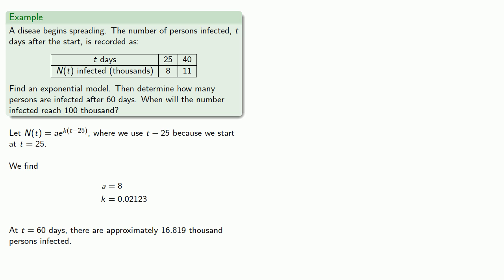To find when the number infected will reach 100,000, we want 100,000 people infected. Well, actually, we don't. Of course, we're asked to find when 100,000 people will be infected. So we know our function and we have that 100,000 people are infected and we'll solve for t.